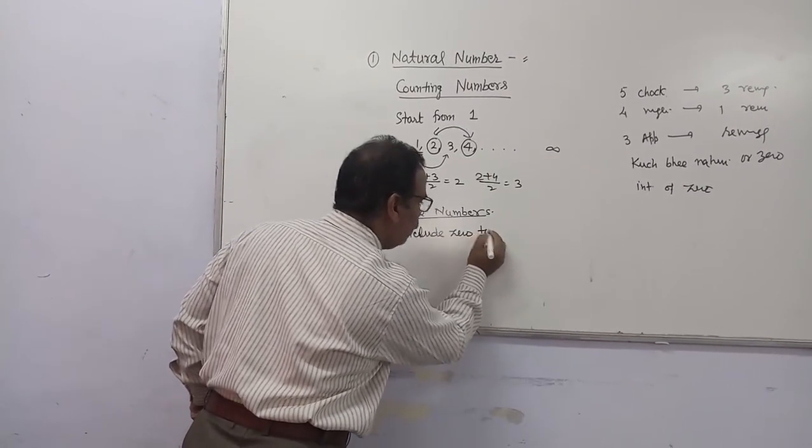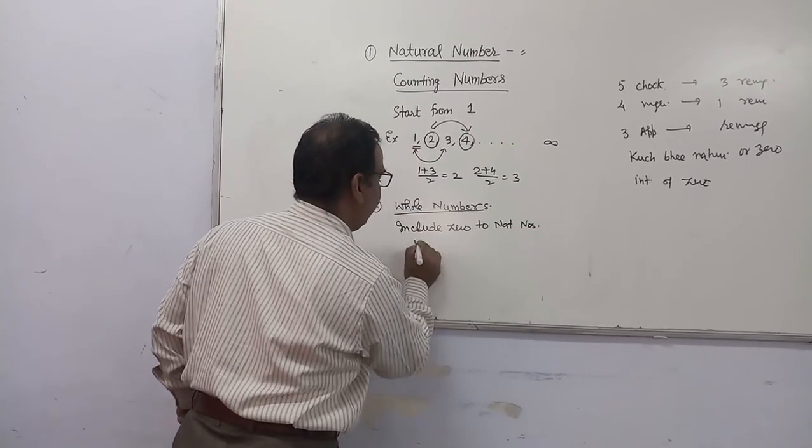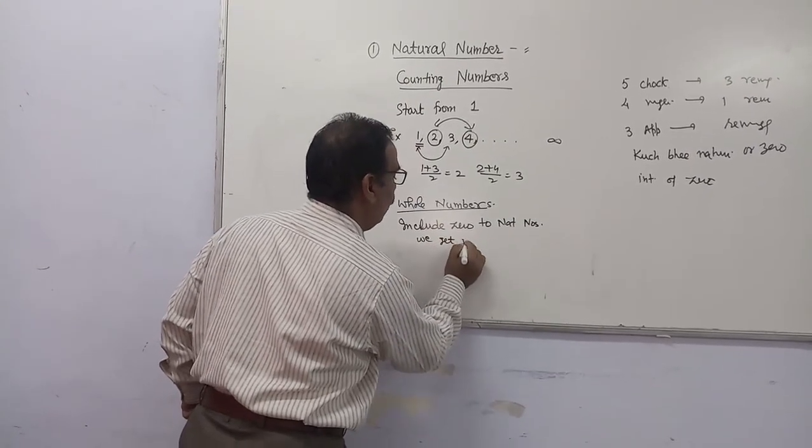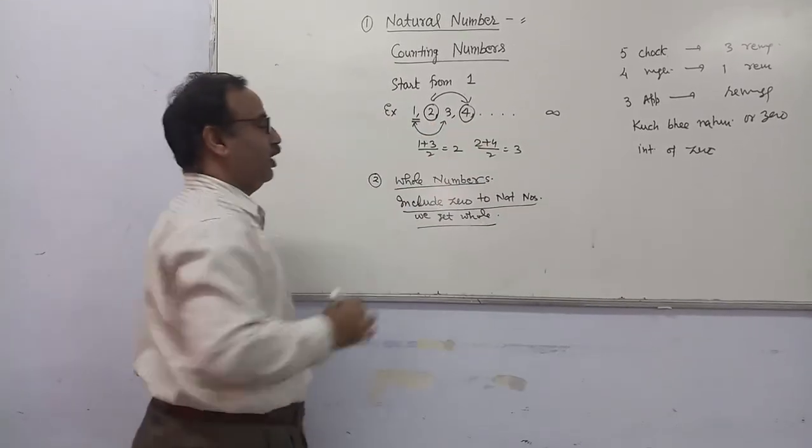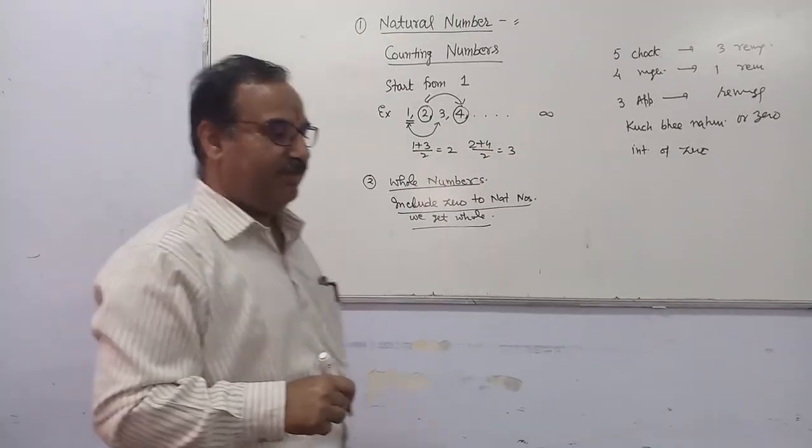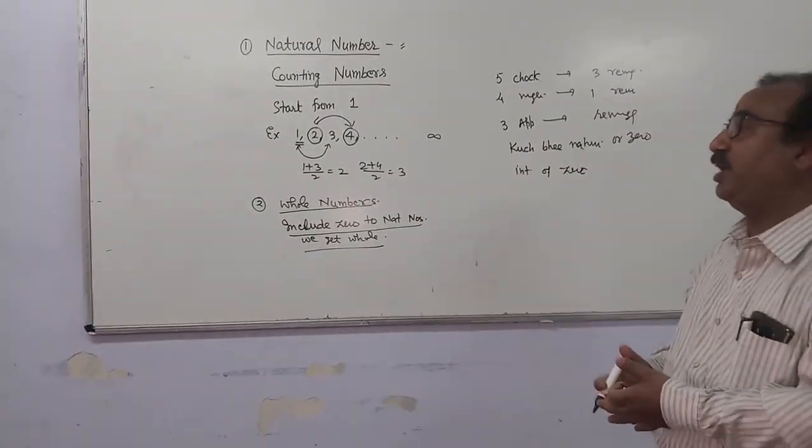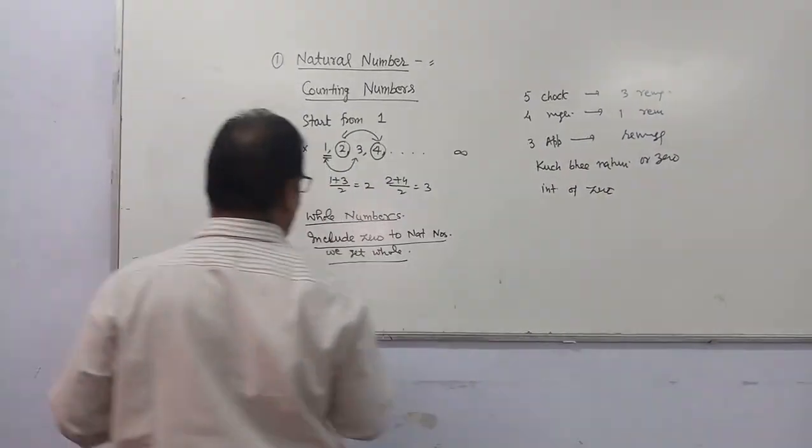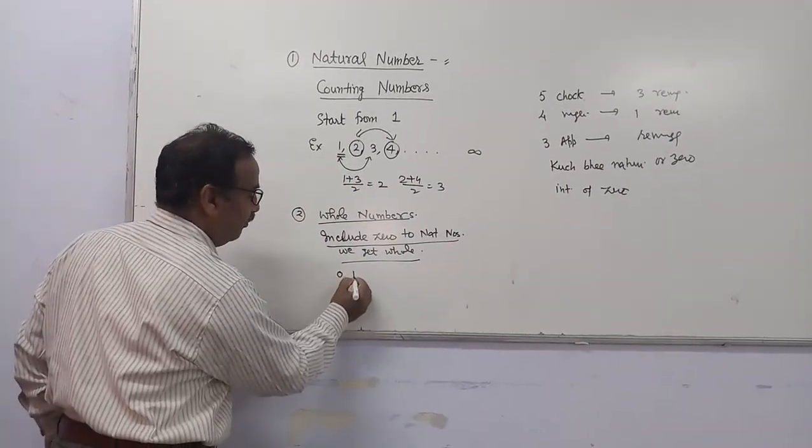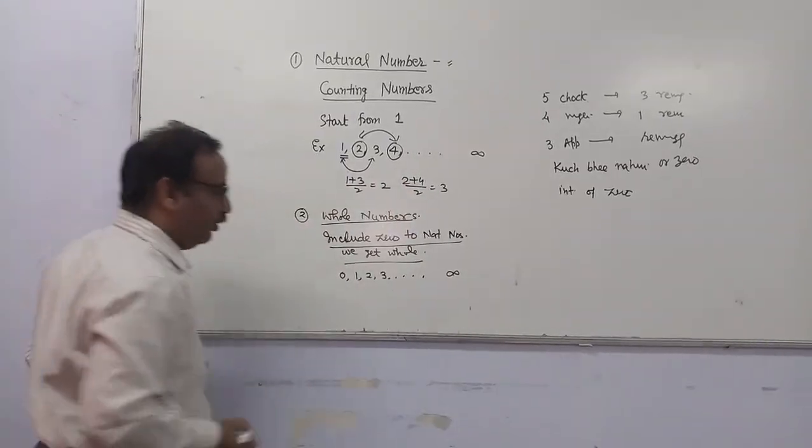...we get whole numbers. So it is wrong to say that when we add 0 to natural numbers, we get whole numbers. Basically, when we include 0 in the whole collection of natural numbers, we get the collection of whole numbers. And then, obviously, whole numbers start from 0, then 1, then 2, then 3, and up to infinity we can go.